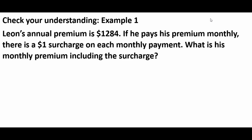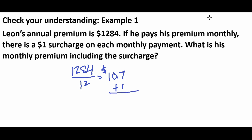Example number one: Leon's annual premium for his car insurance is $1,284 and he pays monthly with a $1 surcharge on each payment. So we divide $1,284 by 12 months, giving us $107 per month. The insurance company adds the $1 surcharge, so he ends up paying $108 each and every month.